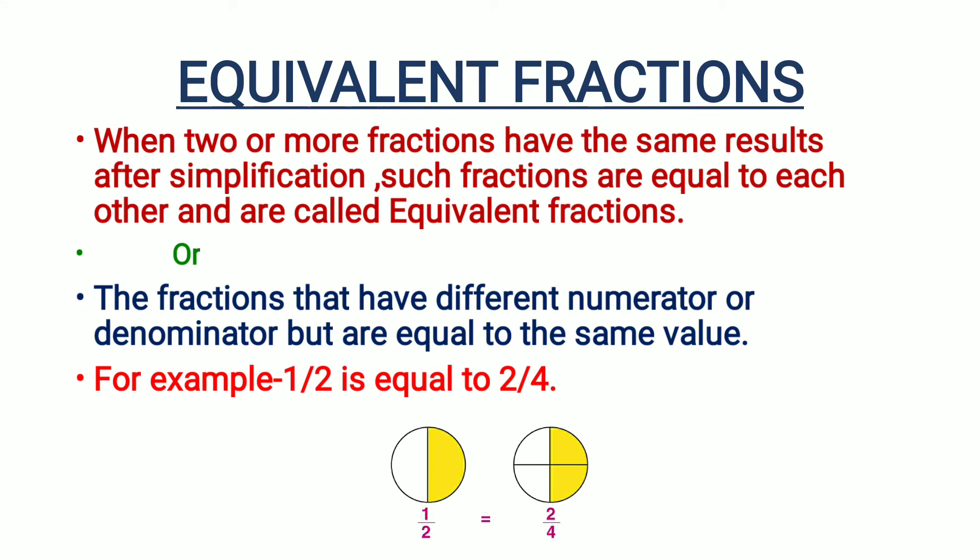As you can see, two circles are there. The first is divided into two parts and the fraction for each part is one upon two. The second circle is divided into four parts; the fraction for the colored part is two upon four. But the portion is the same, so both are equivalent fractions.